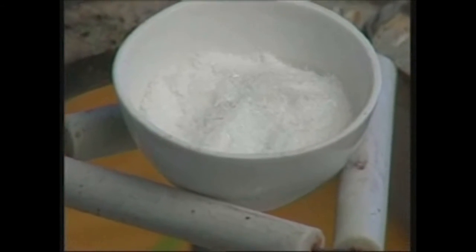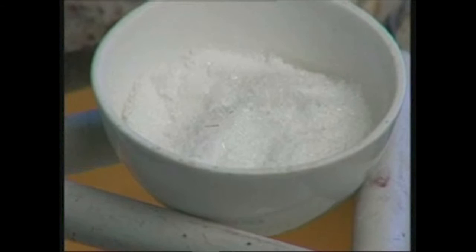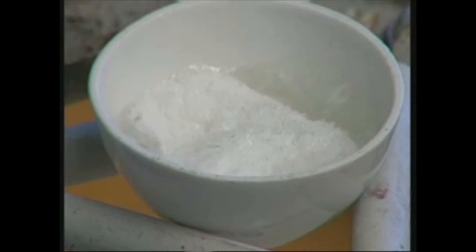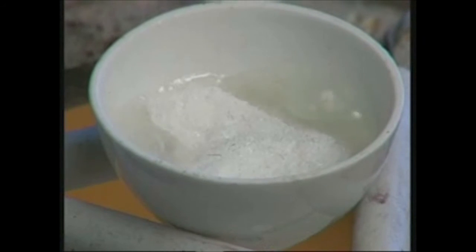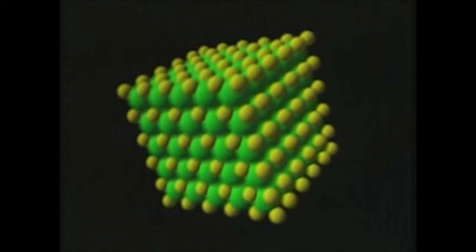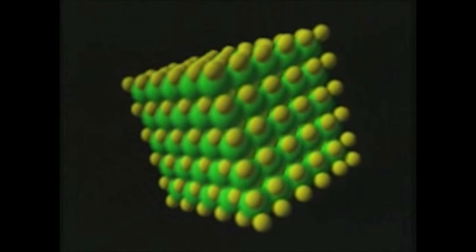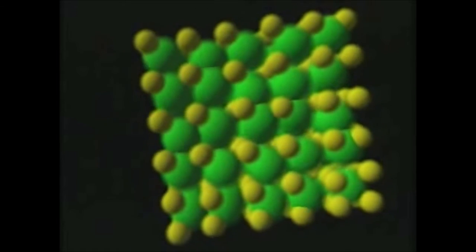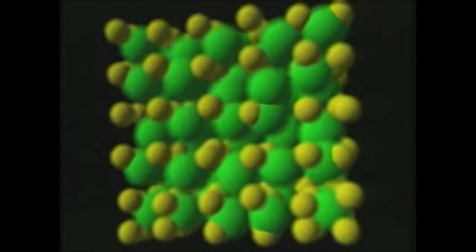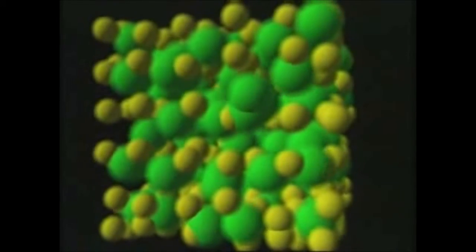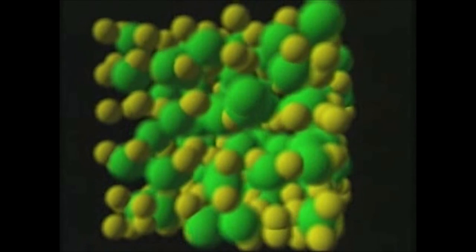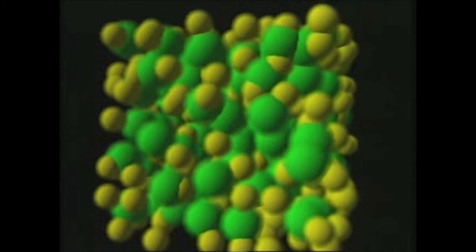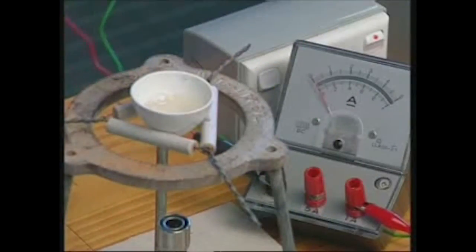What happens when an ionic compound is heated? At around 800 degrees Celsius, this salt turns into a liquid. In our model, we see what's happening. As the individual ions gain energy, they reach a point where their energy of motion, or kinetic energy, overcomes the ionic bonds. As the lattice breaks down, the ions begin to move independently of each other to some extent. The salt is now in a liquid state.